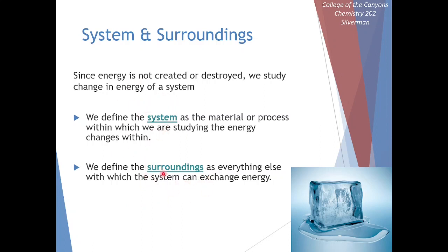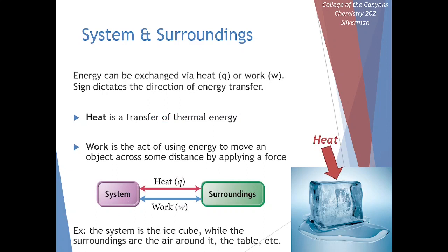The surroundings might be the solution and solvent surrounding our chemicals, or perhaps the laboratory we're doing the experiment in. Once we define our system and surroundings, we can exchange energy between them. There are only two ways to exchange energy: we can have a transfer of energy via heat, which we give the symbol Q, or we can transfer energy via work, with the symbol W. In chemistry, we'll have a sign for heat and a sign for work indicating the direction of energy transfer.